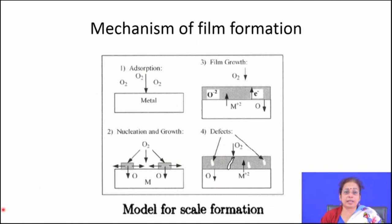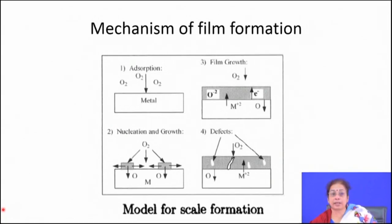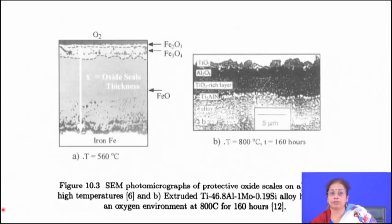Particularly for alloy systems, you have to be careful because different species have different oxide formation rates. The most thermodynamically probable oxide will form on the surface first. Subsequently, factors such as the type of defects in the oxide scale, whether it is protective or not, and the kind of stress generated after oxide scale formation — all play an important role in determining the overall kinetics of oxidation.